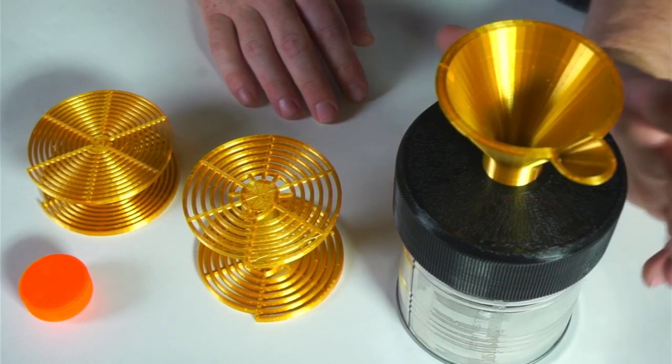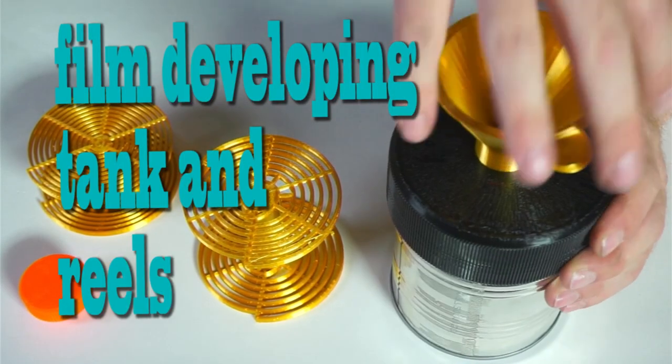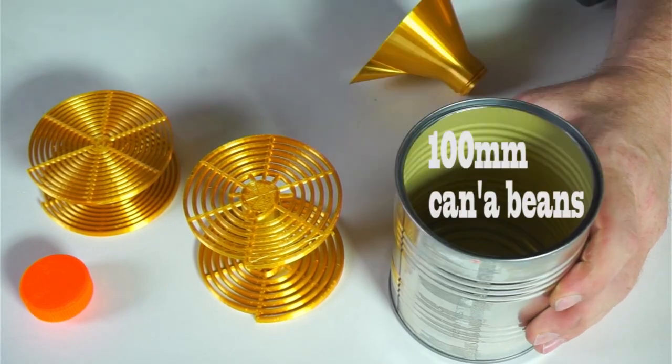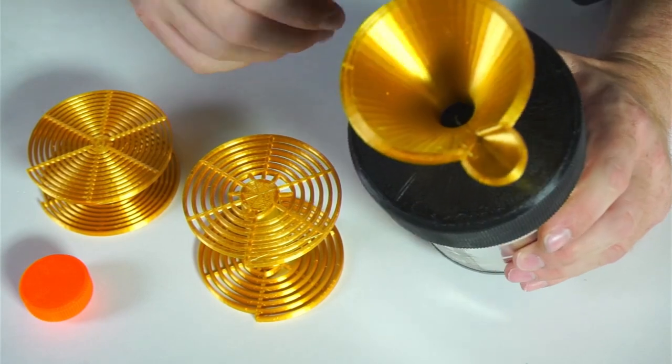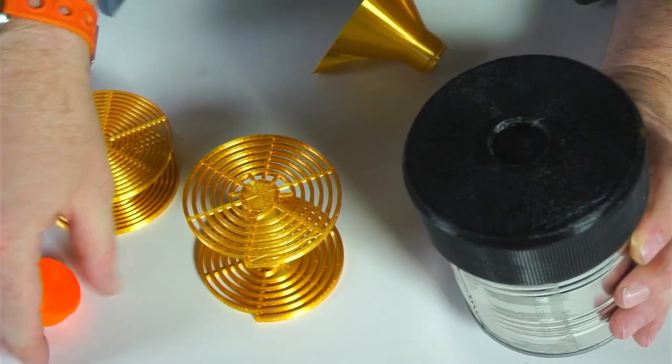In this video we're going to take a look at this light baffle top for a 101mm can of beans. That top's got a screw-on funnel for pouring in and out. It'll let liquid in but no light.